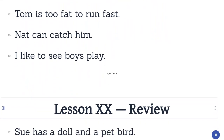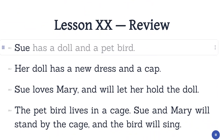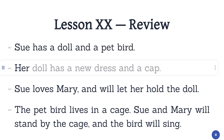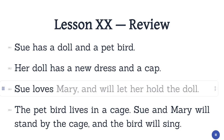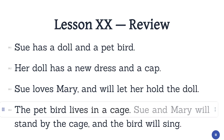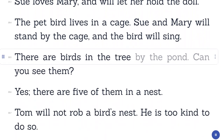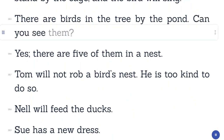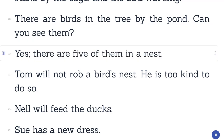Lesson 20. Review. Sue has a doll and a pet bird. Her doll has a new dress and a cap. Sue loves Mary and will let her hold the doll. The pet bird lives in a cage. Sue and Mary will stand by the cage and the bird will sing. There are birds in the tree by the pond. Can you see them? Yes. There are five of them in a nest. Tom will not rob a bird's nest. He is too kind to do so.